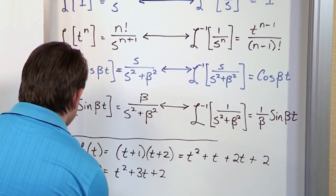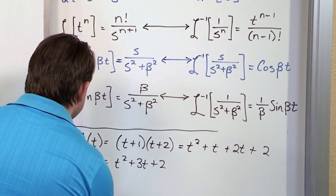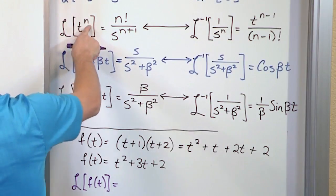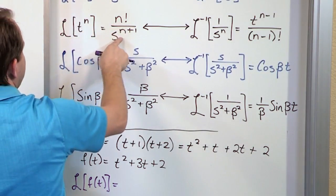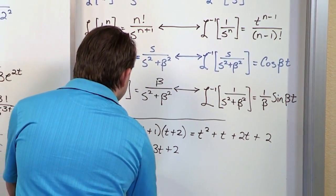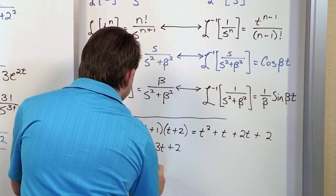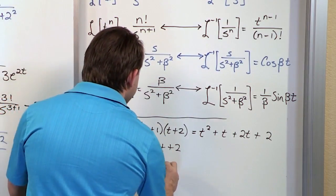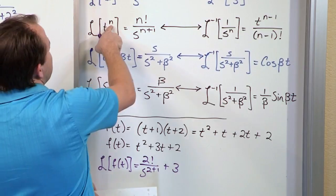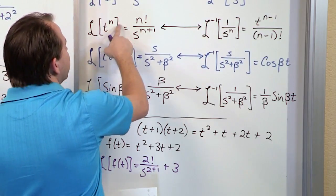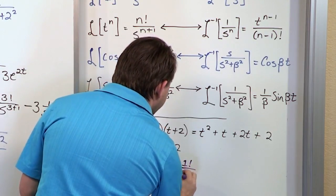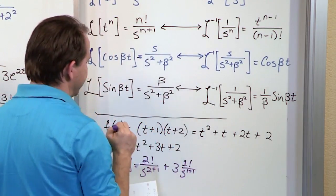So we'll say Laplace transform of f of t equals t squared. We'll go up here where this is 2, so it would be 2 factorial s to the 2 plus 1. That's the first term. And then we have 3 times the Laplace transform of t, which again, here the power would be 1, so it would be 1 factorial over s squared. So it would be 1 factorial s 1 plus 1 is how we'll write it for now.